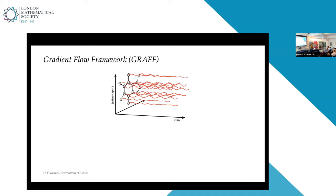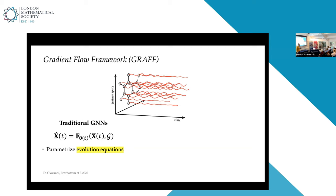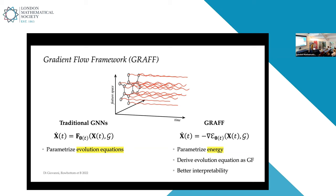In traditional graph neural networks from this perspective: you start with an evolution equation, discretize it, and parameterize the different steps — every iteration of the discretized solver corresponds to a layer with a different set of parameters. What I'm suggesting instead is to start with an energy, parameterize the energy, and derive the evolution equation as its gradient flow. This offers better interpretability — certain behaviors can be avoided or obtained, guiding architectural choices that would otherwise be completely arbitrary.